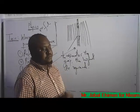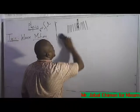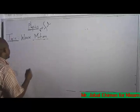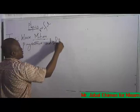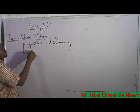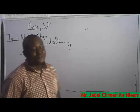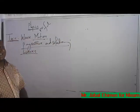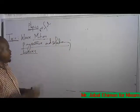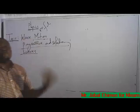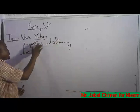Now let's talk about progressive and stationary waves. There are waves that are stationary and waves that are progressive. A progressive wave is a moving wave — a traveling wave. Any wave that moves is said to be a progressive wave.